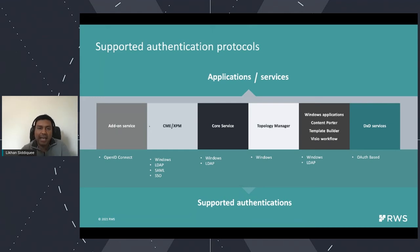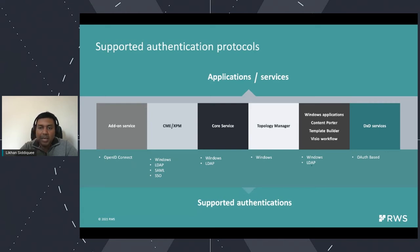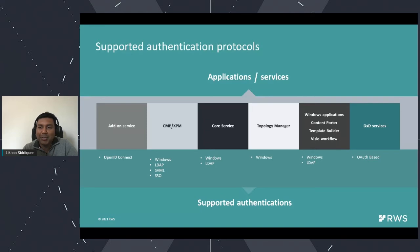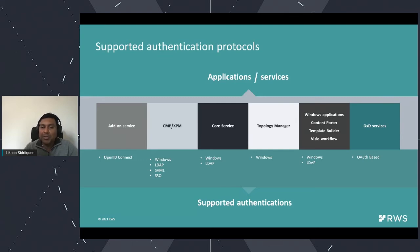Our current stack has CME and XPM supporting Windows, LDAP, and SAML; Core Service only supporting Windows and LDAP; Topology Manager only Windows; Windows applications like Content Porter and Template Builder only supporting Windows and LDAP without SAML; and DXD services using bearer token authentication. You can see how, as each individual service was developed at a different time, fragmentation grew. The new DXD microservices were developed when we knew bearer token was the way forward, but older applications started with Windows and had to maintain backwards compatibility.